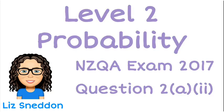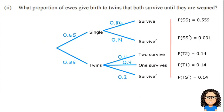Hi, I'm Liz Nedden. Let's have a look at question 2a part 2 from the 2017 level 2 probability exam. So here is the question. Now I've got the tree diagram drawn up from the question. If you're not sure how that works, please see the video for part 1.